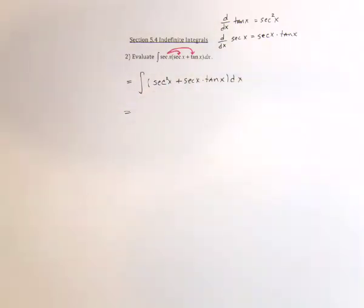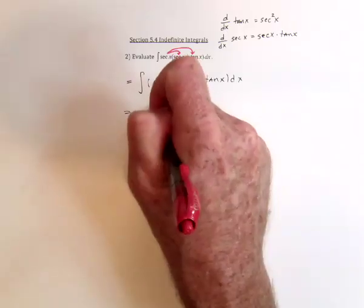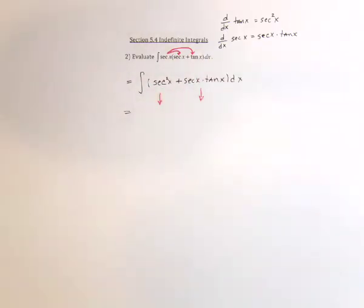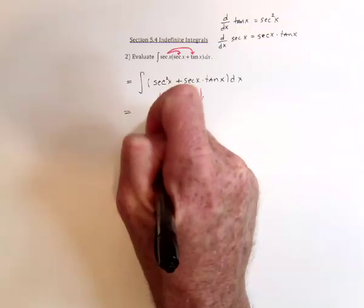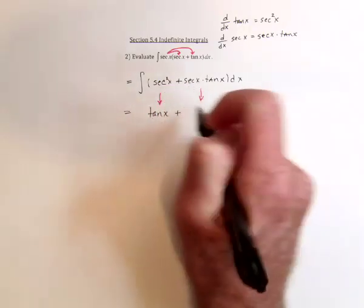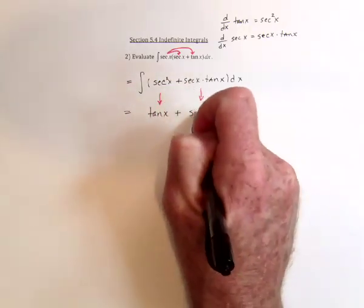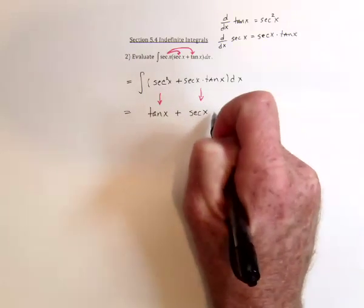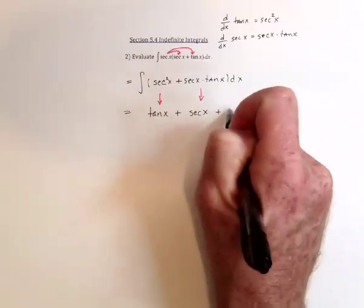And then the antiderivative of secant squared is tangent of x. And for secant times tangent, that's just secant for the antiderivative. And then plus a constant.